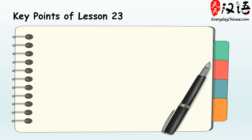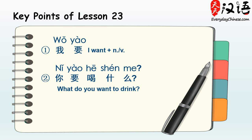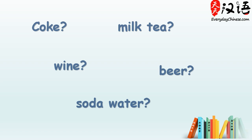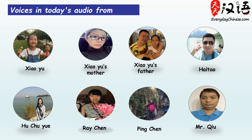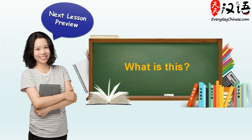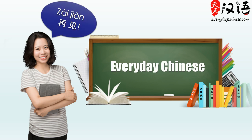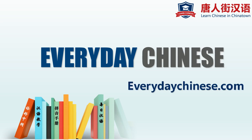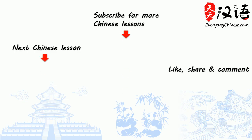All right, to recap. Today we've learned how to use 我要 to make a request, such as to order a drink, and how to ask people what they want to drink: 你要喝什么? Also we've learned how to use 请问 to ask a question in a polite way. If you want to learn how to say more drinks in Chinese, please leave us a comment. Thanks to our contributors in today's lesson. In our next lesson, you will learn how to ask, what is this? See you next time. 再见!